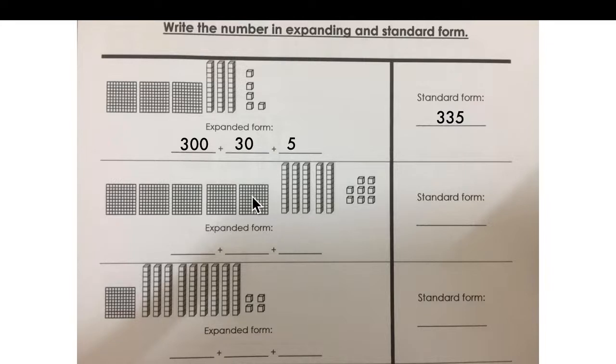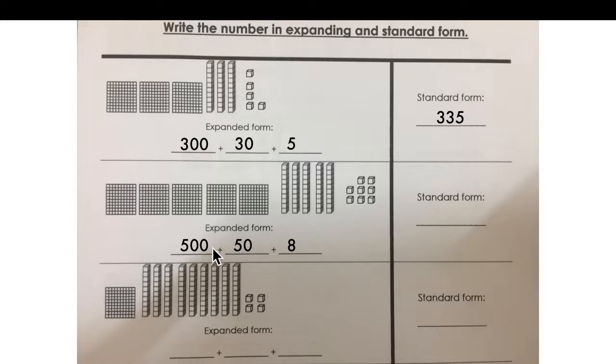Let's go to the next one. How many hundreds can you count? 1, 2, 3, 4, 5. Five hundred. How many tens? 1, 2, 3, 4, 5. But five tens is fifty. How many ones do we have? 1, 2, 3, 4, 5, 6, 7, 8. Five hundred, then fifty, and eight. Take 5, 5, 8 — the number will be five hundred fifty-eight.